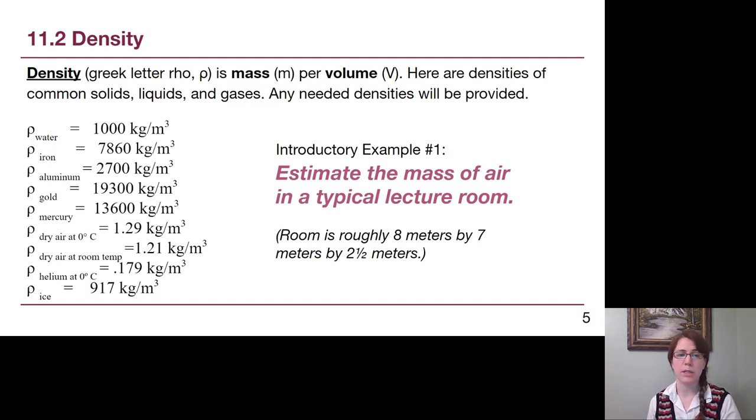Things that we think of as liquids, water here in this list, have a kind of middle density. And things that we think of as solids, with the exception of ice, have higher density: iron, aluminum, gold, mercury. Gold is extremely dense. If you were holding a little cube of gold and a little cube of aluminum, the gold would feel heavier if the volumes were the same.